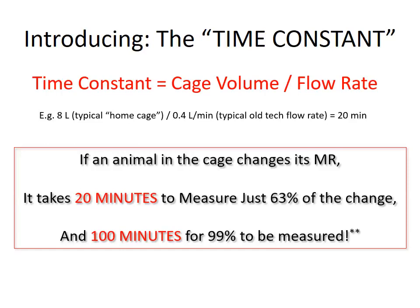So as a side effect of this, if the animal in the cage changes its metabolic rate suddenly, it will take 20 minutes for the instruments connected to the cage to measure just 63% of the change — by which time the animal is doing something completely different. And 100 minutes for 99% of that change to be measured, by which time the animal has been doing dozens of different things. I would encourage you to read my textbook if you have any questions of this kind, because everything is explained there.